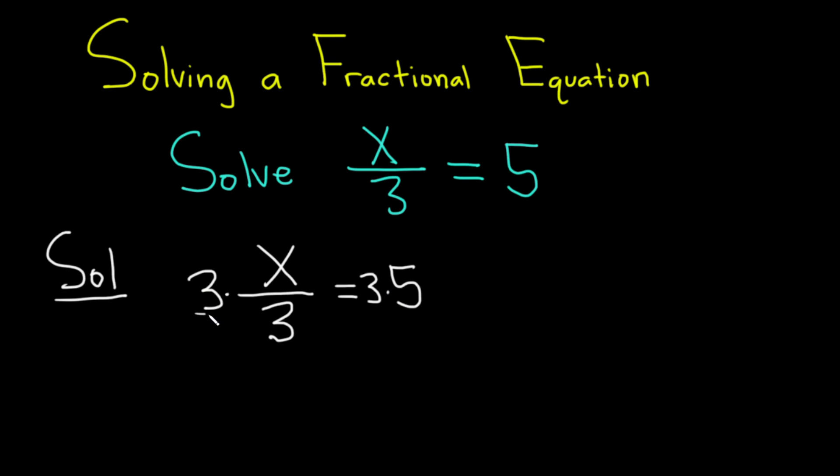Now this is really 3 over 1, so it'll cancel with this one. So we're left with x equals. And over here on the right-hand side, we multiply the 3 and the 5. 3 times 5 is 15. And so we end up with the answer of x equals 15.